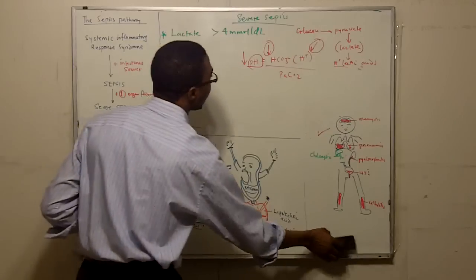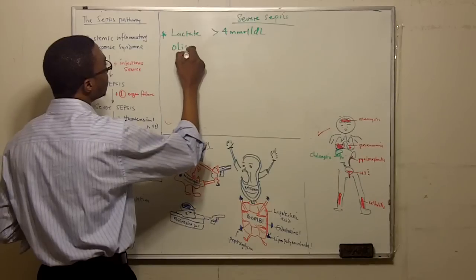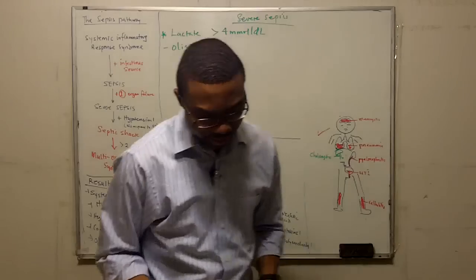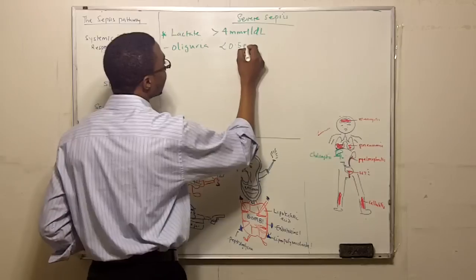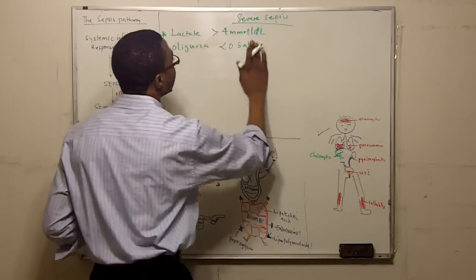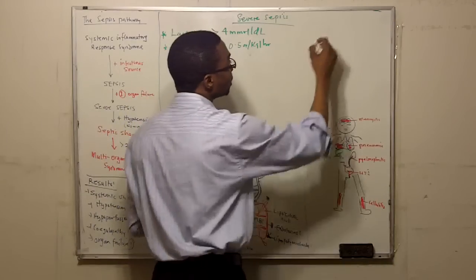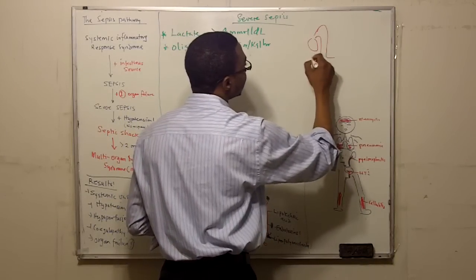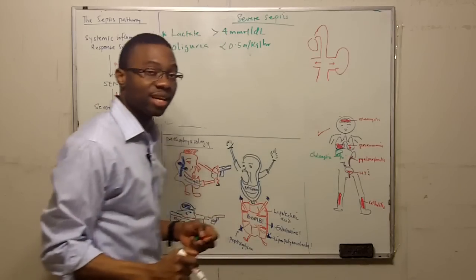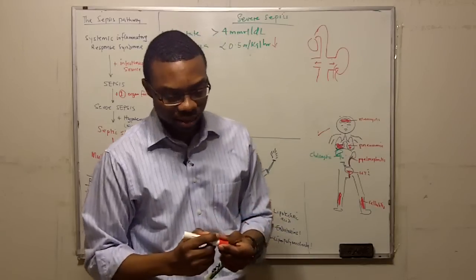Also oliguria, decreased urine output, usually less than 0.5 milliliters per kilogram per hour. That means you have so much systemic vasodilation. This is your aorta coming from your heart, and this is your kidneys. Everything is so big, the kidneys are not getting enough perfusion because systemic vasodilation is the key. It's severe in sepsis. You develop oliguria and the kidney can't really filter stuff out and you're not peeing, you don't have enough urine.